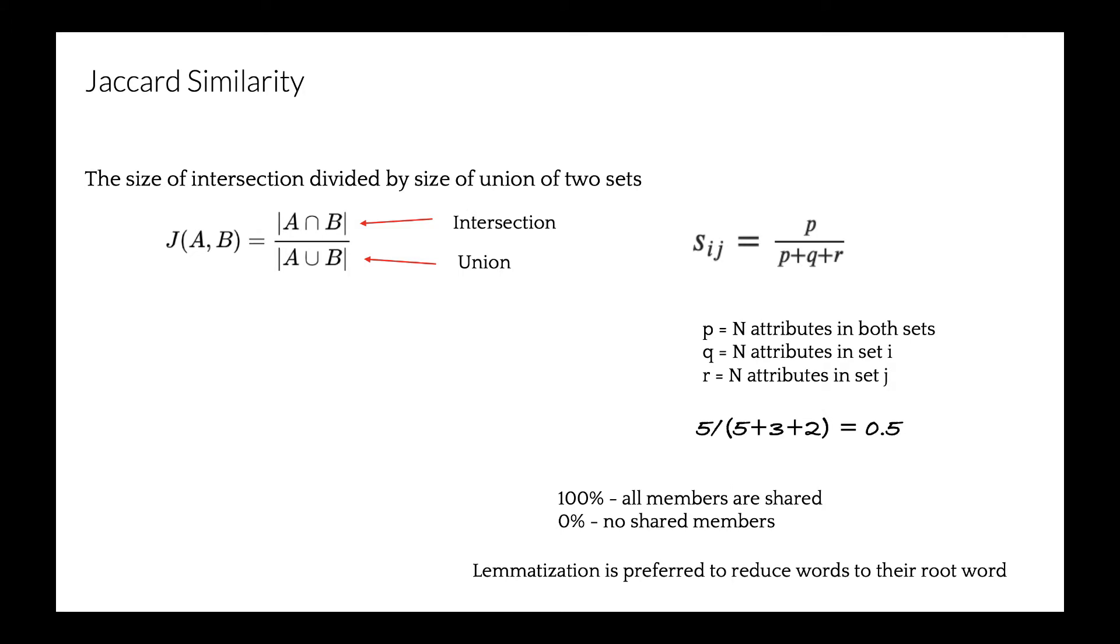For Jaccard similarity, we need to remember the concept of intersection and union. It is defined as intersection over union, or the size of intersection divided by size of union of two sets. Jaccard similarity index, sometimes called Jaccard similarity coefficient, compares members for two sets to see which members are shared and which are distinct.